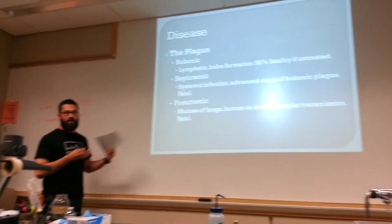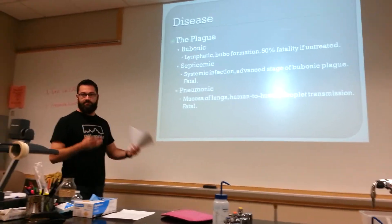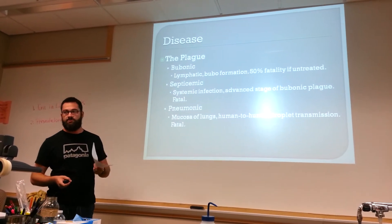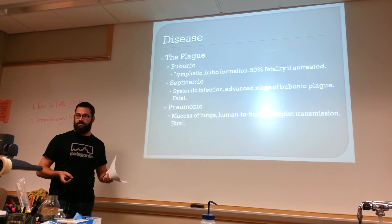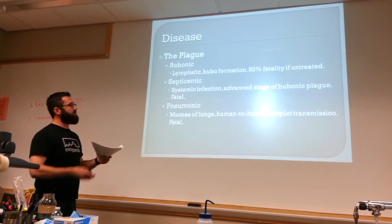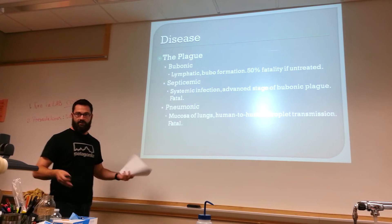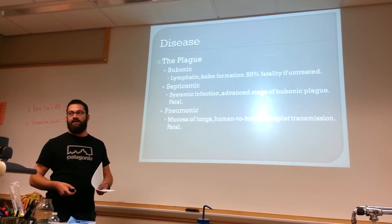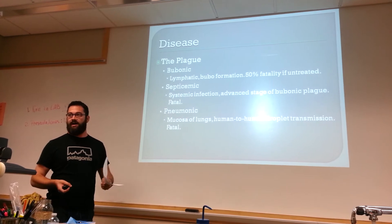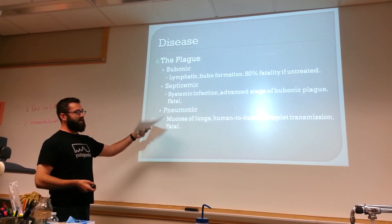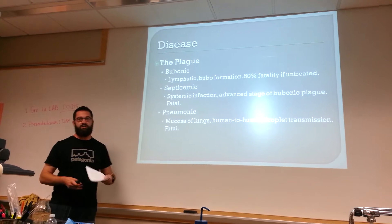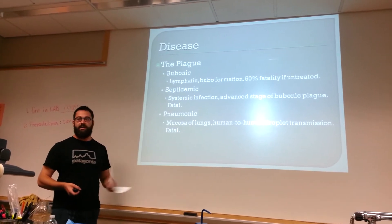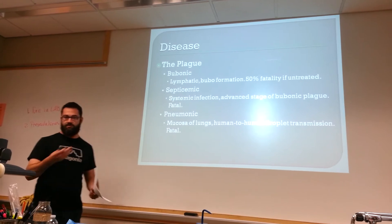The plague has three forms. There's bubonic, which is the lymphatic form producing bubos spread by fleas — if untreated, you have a 50% fatality rate, which is why the death rate was so high in Europe. If this continues, you have septicemic plague, a systemic infection spreading throughout the blood and through the meninges into the brain, causing hypotensive shock. It's fatal. And then pneumonic plague is in the lung tissue — this is how it spreads human to human.